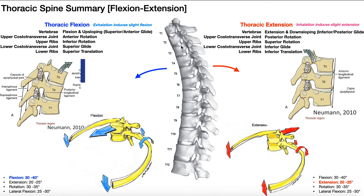Let's talk about flexion — bending forward, like if you want to touch your toes. The vertebral movement is going to be net flexion; that's the osteokinematic movement. The arthrokinematic movement is upsloping. Whenever you go into thoracic flexion, the superior vertebra is going to glide both superiorly and anteriorly relative to the vertebra below. For example, T5 during flexion is going to glide superiorly and anteriorly relative to T6, T6 relative to T7 — that's upsloping, and it occurs during flexion.